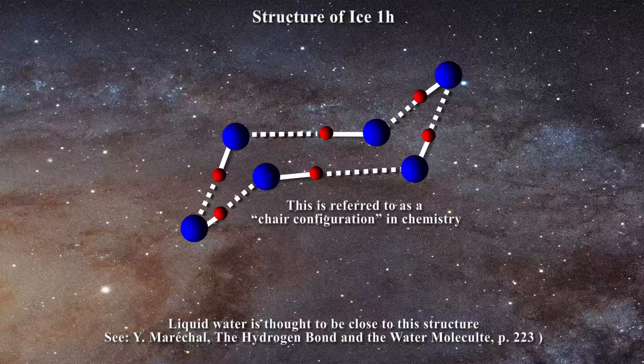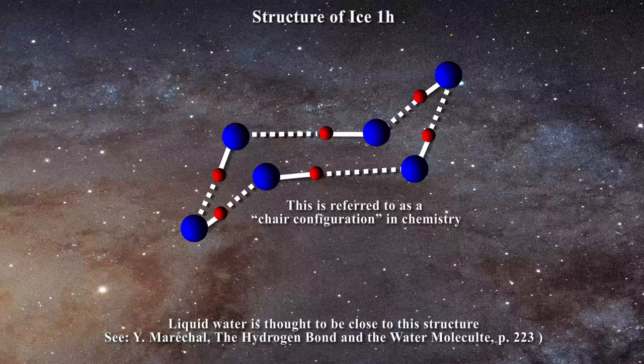The question is, how does this puckering affect the absorption and emission of water? Obviously water is transparent in the optical range, whereas graphite is opaque. Now why is that?